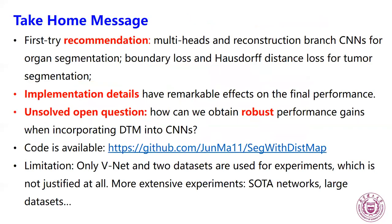Finally, we give the take-home message. In terms of better Dice score, our first recommendation would be multi-task and reconstruction branch approaches for organ segmentation, and the boundary loss and Hausdorff distance loss for tumor segmentation. It should be noted that implementation details have remarkable effects on the final performance. This is still an unsolved open question: how can we obtain robust performance gains when incorporating digital transform maps into convolutional neural networks?